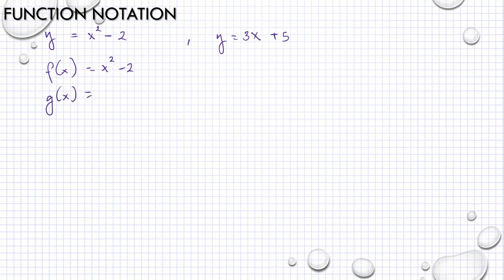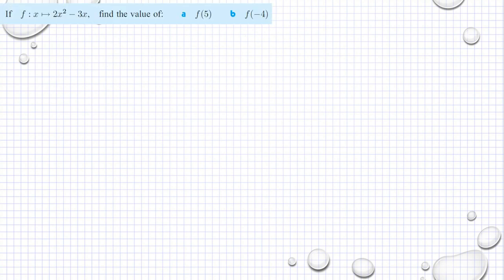But instead I can use g of x equals 3x plus 5 to distinguish these two different functions. Others use this notation as you can see here, the function f such that x equals 2x squared minus 3x. They are using this function notation.